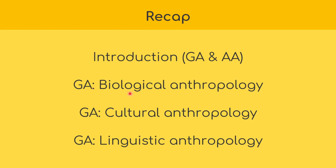We explored three general anthropological subfields. The first is biological anthropology, which focuses on the biological aspects of human beings. For example, trying to discover why people in certain parts of the world have barrel chests while others have normal chests, and why some communities have certain facial features or darker skin colors.